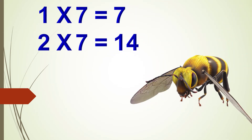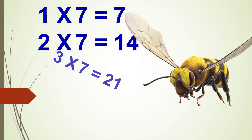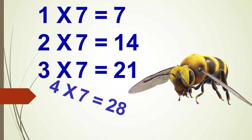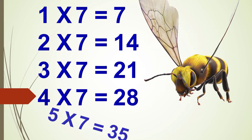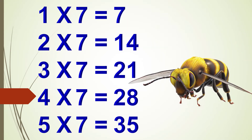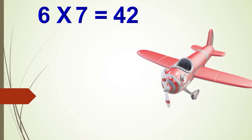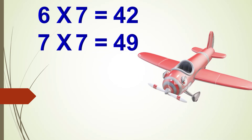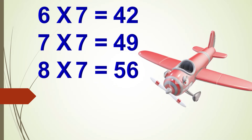Two times seven are fourteen, three times seven are twenty-one, four times seven are twenty-eight, five times seven are thirty-five, six times seven are forty-two, seven times seven are forty-nine, eight times seven are fifty-six.